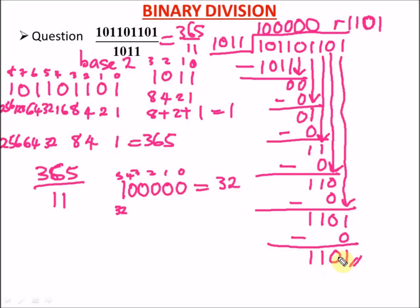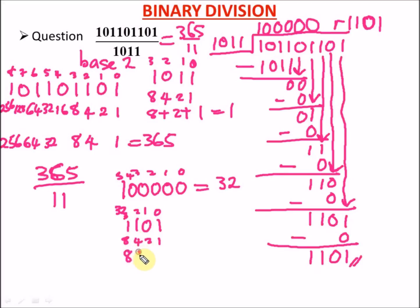Now let's convert the remainder 1101 to base 10. The positional values are 2⁰=1, 2¹=2, 2²=4, 2³=8. We have 8 + 4 + 1 = 13. So the remainder in base 10 is 13.